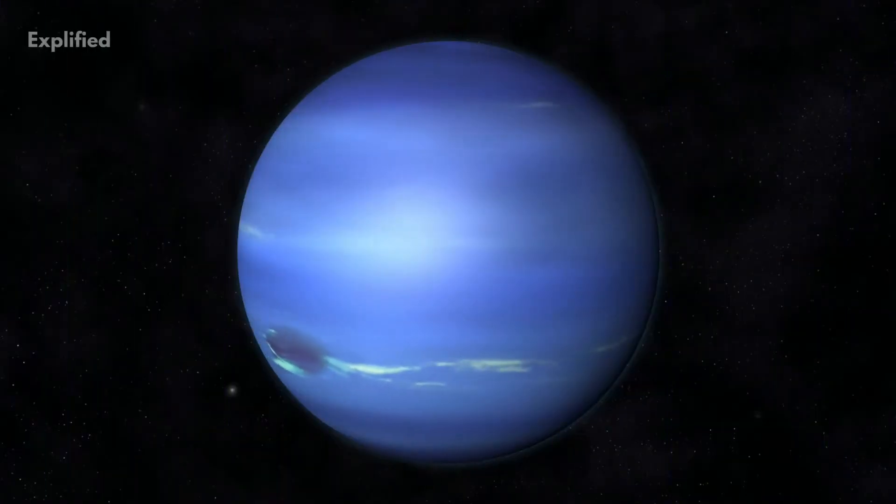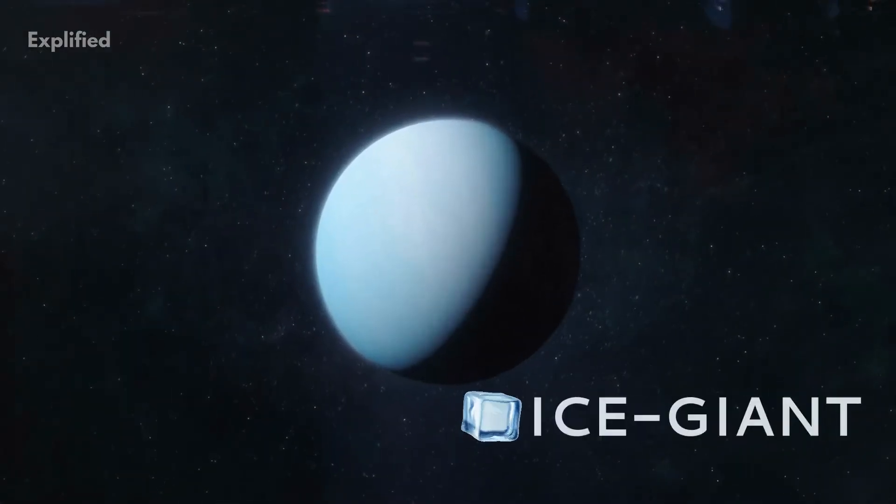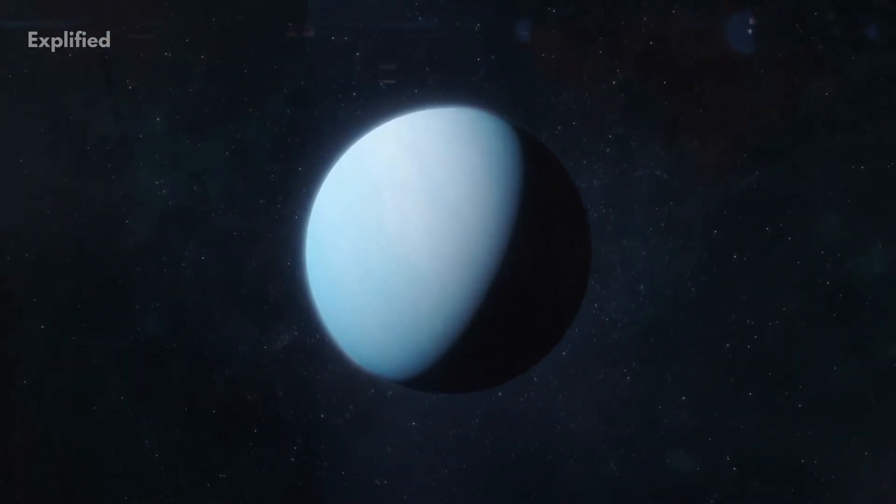Neptune is the eighth planet from the Sun and also the fourth largest. It is an ice giant that has the strongest winds of any planet in the solar system.